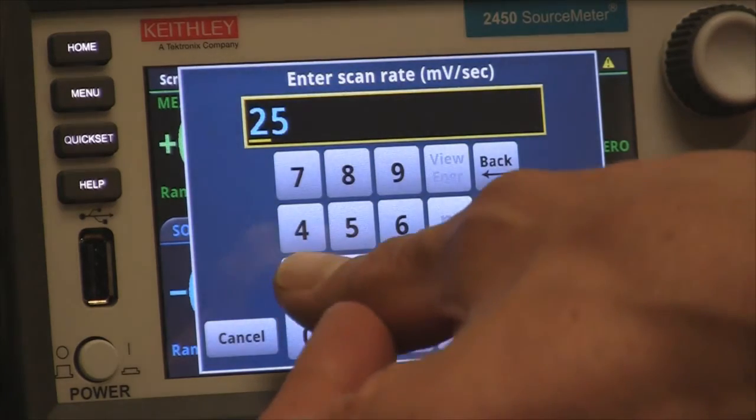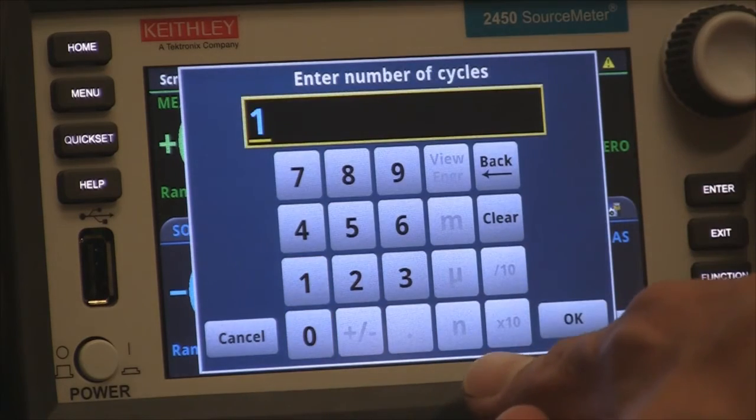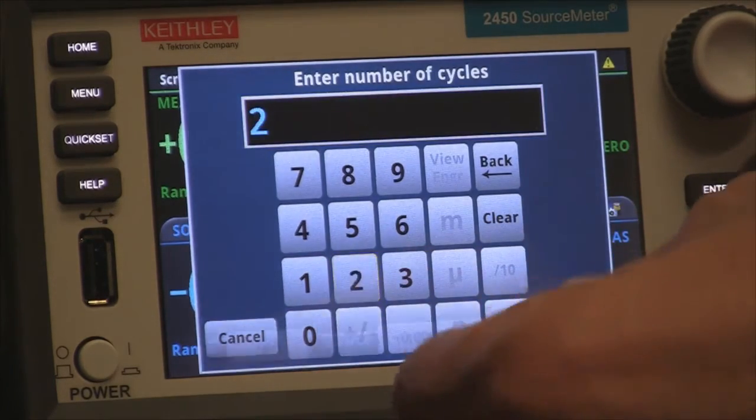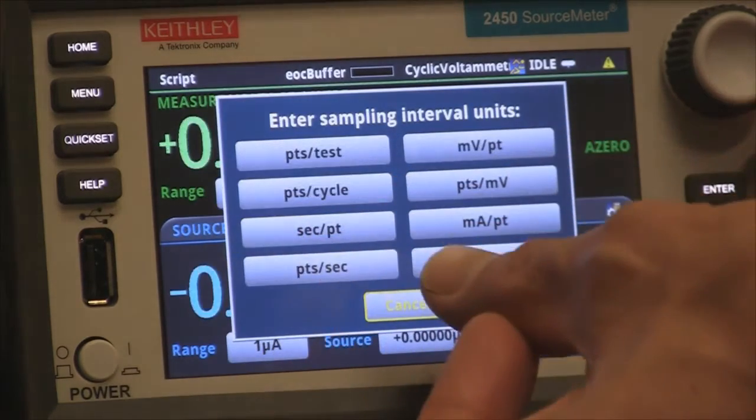For the scan rate, we're going to select 100 millivolts per second. For the number of cycles, we're going to select two. For the maximum current range, we're going to select a milliamp based on the chemistry.